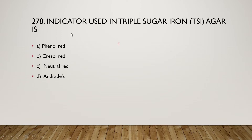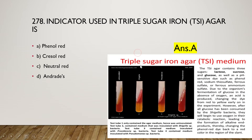The next question is: the indicator used in Triple Sugar Iron agar is (A) phenol red, (B) cresol red, (C) neutral red, or (D) endo red. The right answer is option A — phenol red is used as the indicator in Triple Sugar Iron agar. This medium contains three sugars: lactose, sucrose, and glucose, for the growth of microorganisms.